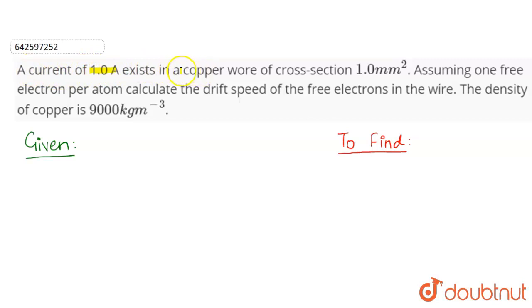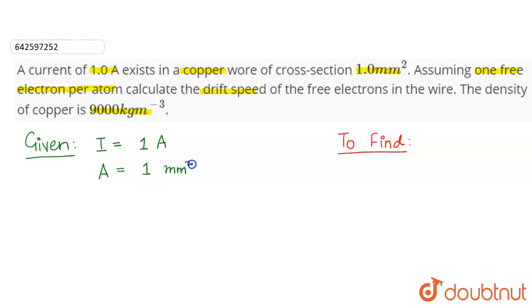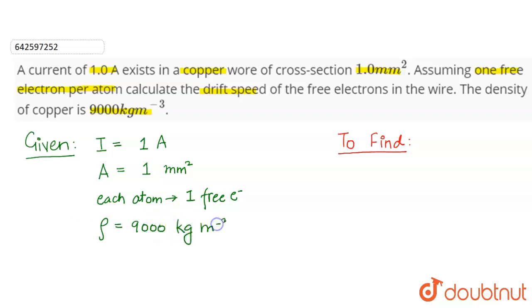The question is: a current of 1 ampere exists in a copper wire of cross-section 1 mm squared, assuming one free electron per atom. Calculate the drift speed of the free electrons in the wire. The density of copper is 9000 kg per meter cube. So the given values are: current in the copper wire is 1 ampere, cross-sectional area is 1 mm squared, each atom contains one free electron, and density of copper is 9000 kg per meter cube.